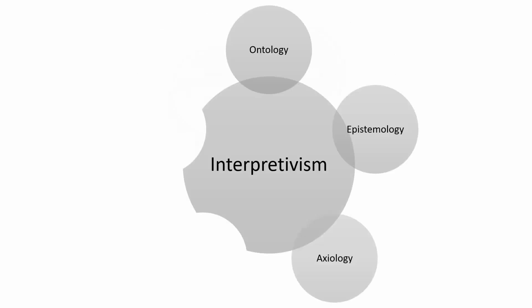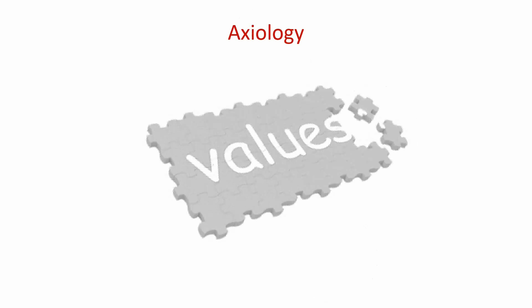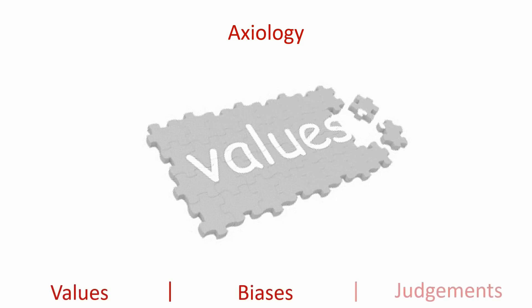The next assumption we will be looking at is axiology. Axiology refers to the role the researcher's own values play in acquiring knowledge in the research process. Every decision we make — from the topic we choose to the research instrument we use to how we interpret our data — demonstrates the values we hold dear as a researcher. Every chosen topic tells the world that you value this topic above all other topics available. If you decide to do an interview over an anonymous survey, you tell the world that the most important thing to you is engagement with your participants. The point of axiology — which is your values, biases, or judgments — is for you to think about the role values play in your study and how these values may impact the results of your research.